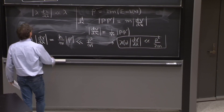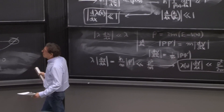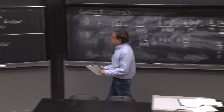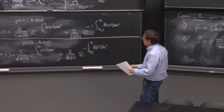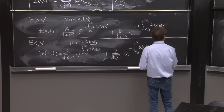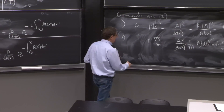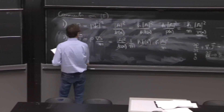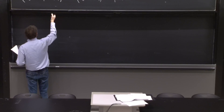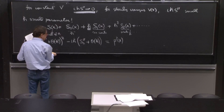So at the end of the day, this h-bar → 0 approximation has become a physical statement. It is a statement of quantities varying slowly, because that is what motivated the expansion from the beginning.